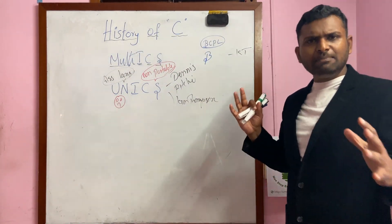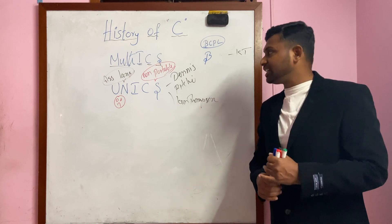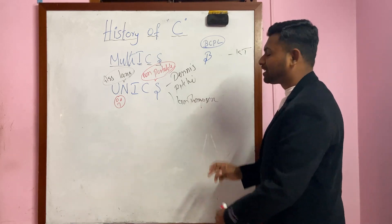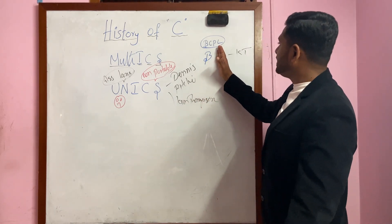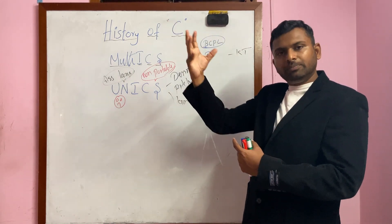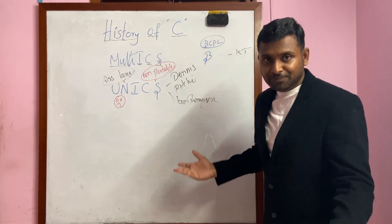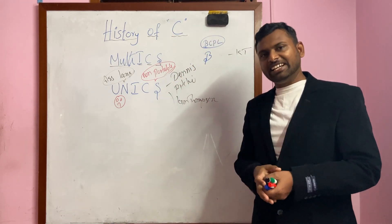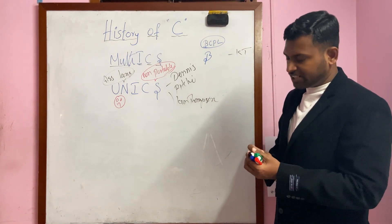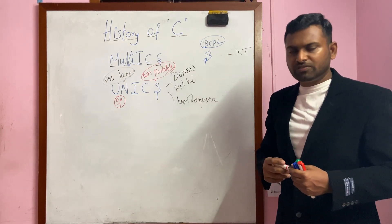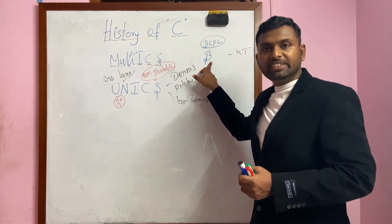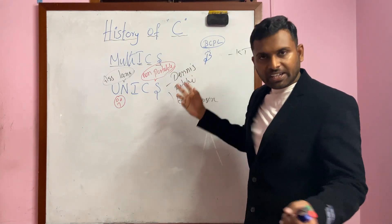Why B? My assumption is that they were probably influenced by BCPL — considering BCPL as A, he named the next one B. Maybe — possible, right? So that is why Ken Thompson named it B. They then tried to redesign the UNIX operating system with the help of programming language B, but again it didn't work out.